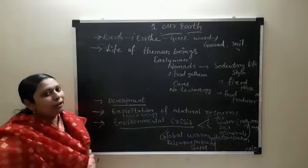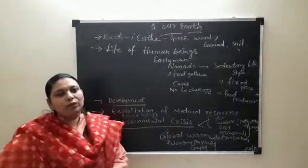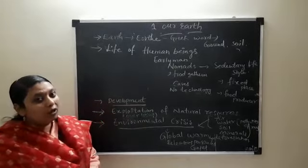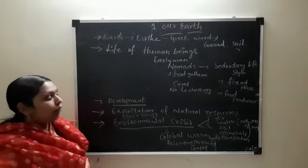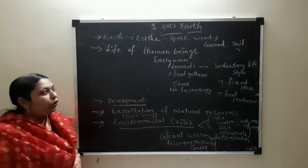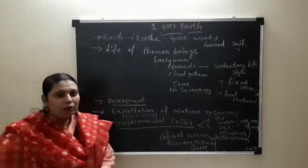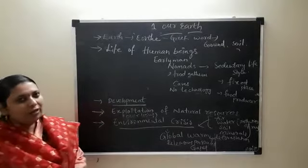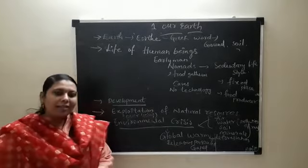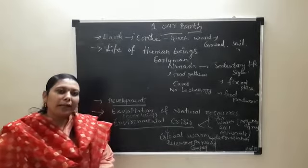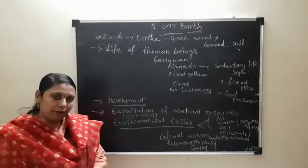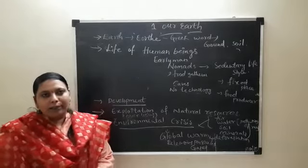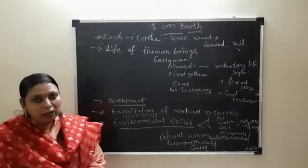So what is the meaning of earth? Actually the word earth came from the Greek word 'iort'. Iort means ground, soil, or layers of the soil. And in Sanskrit also we have different types of meanings for earth: avani, dharani, prutvi, bhoomi.